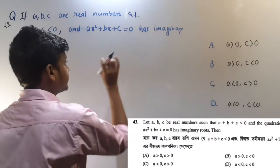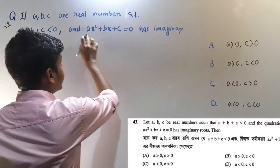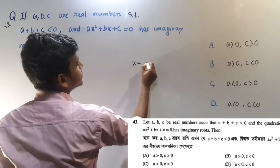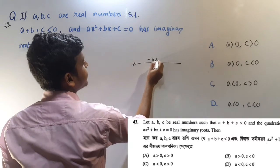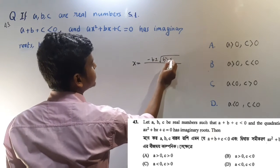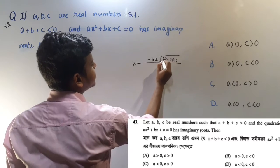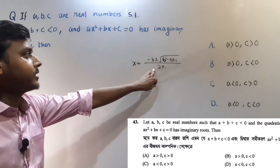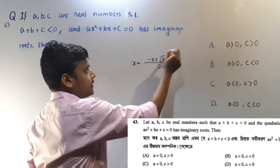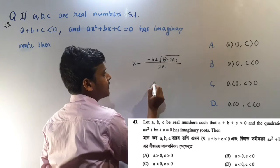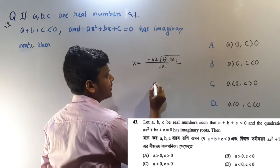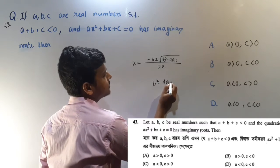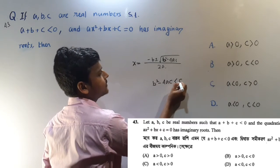To find the condition for imaginary roots, we use the quadratic formula: A equals negative B plus or minus the square root of B squared minus 4AC, all over 2A. For the equation to have imaginary roots, the discriminant must satisfy B squared minus 4AC less than 0.